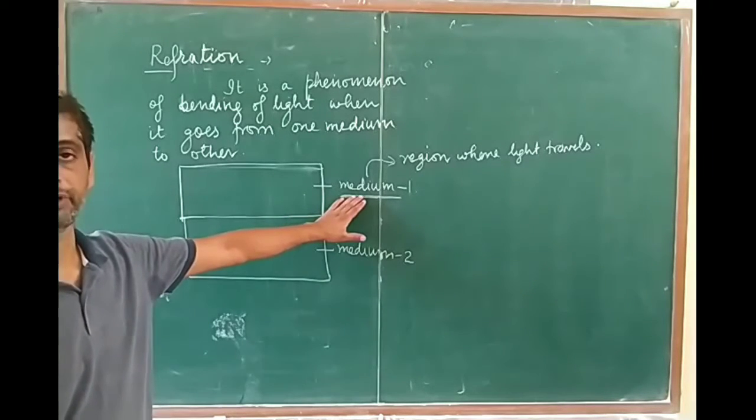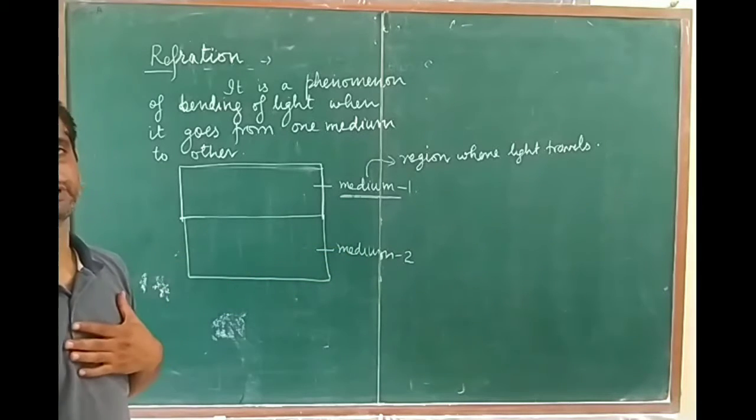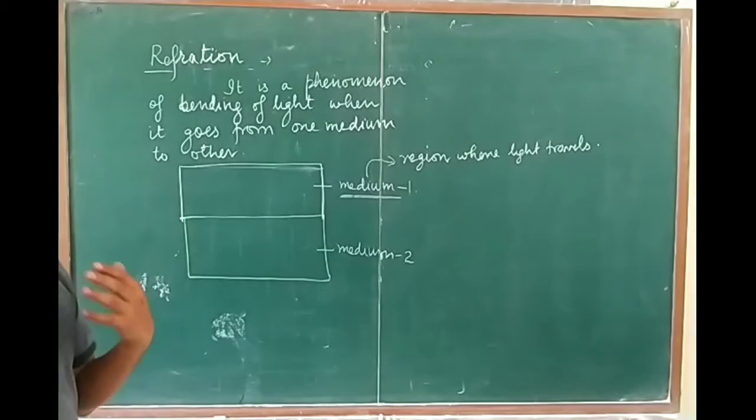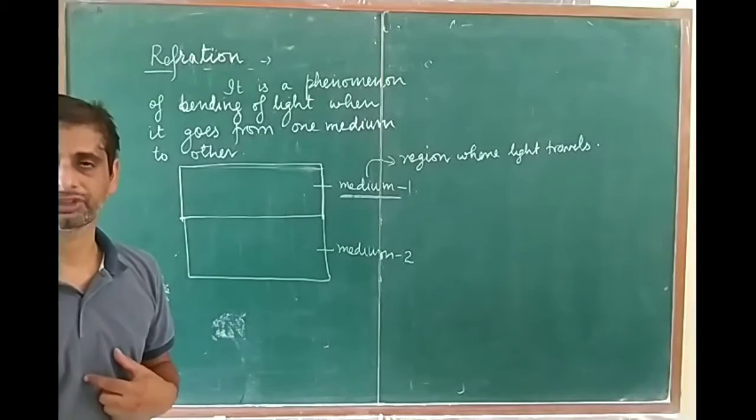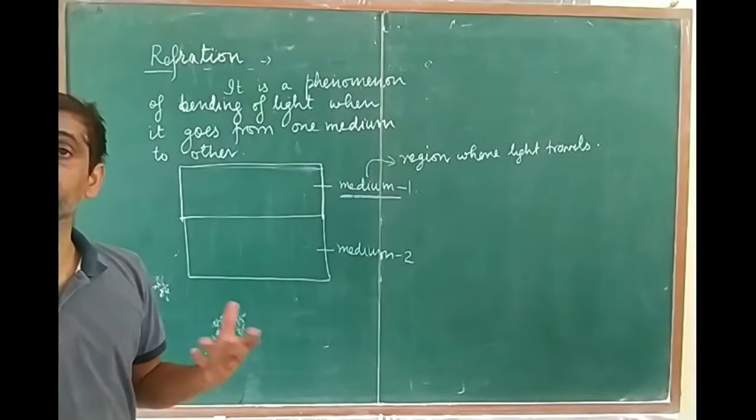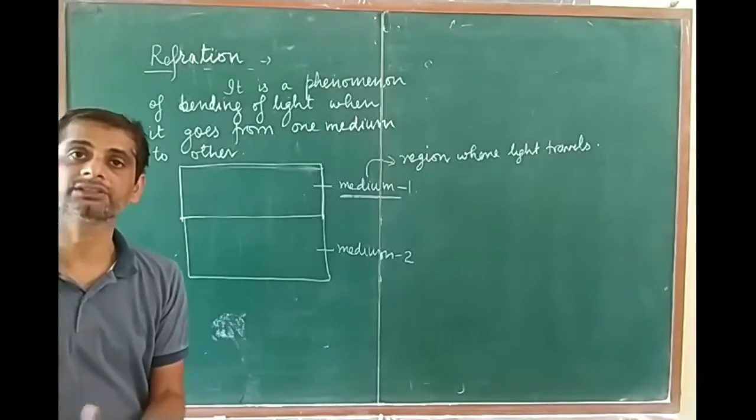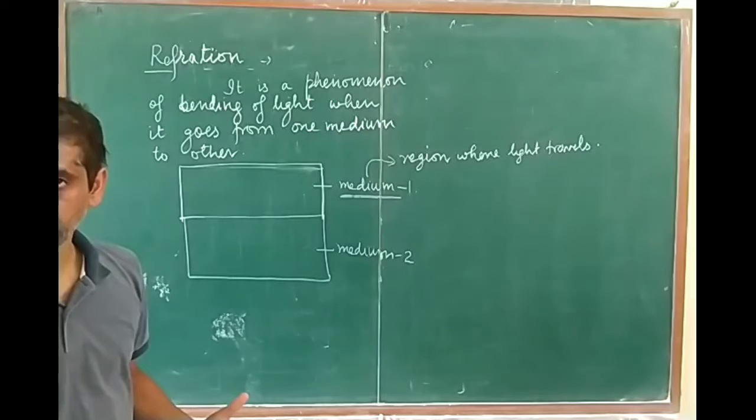I have two mediums: medium 1 and medium 2. First, what is a medium? A medium is a region where light travels. Suppose light is traveling in air, so air is a medium. If light is traveling in glass, then glass is a medium.